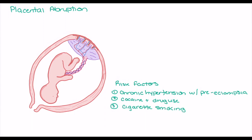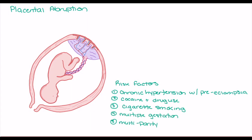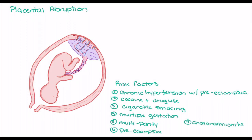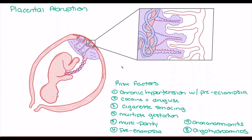Cigarette smoking is closely related to placental abruption, and the number of cigarettes smoked during pregnancy proportionally increases the chances of abruption. Other maternal factors — including multiple gestation, multiparity, moderate to severe preeclampsia, and chorioamnionitis (an infection of the chorion or amniotic sac) — lead to a moderate increase in risk. Finally, oligohydramnios, or deficiency in amniotic fluid production, has a low but notable correlation with placental abruption.